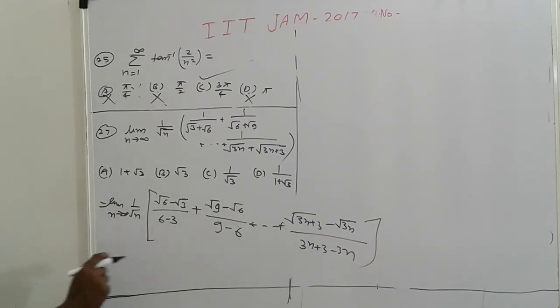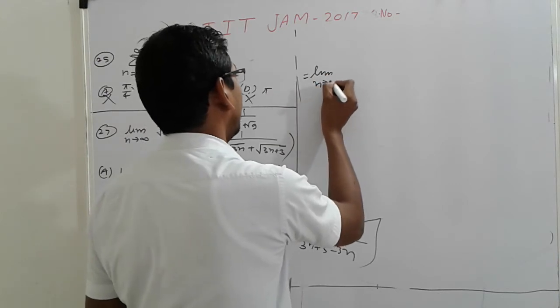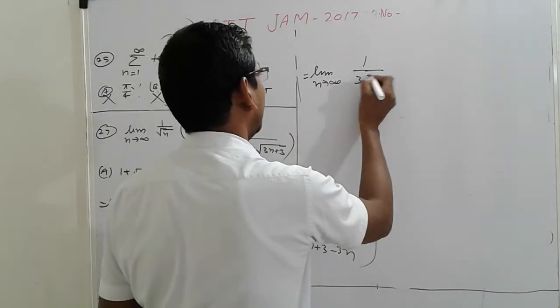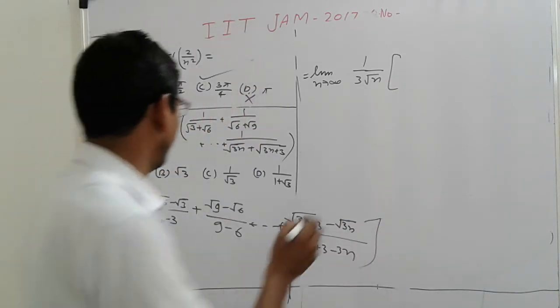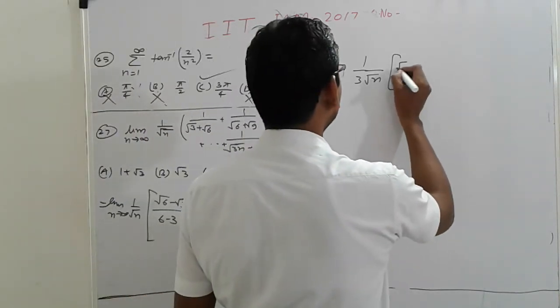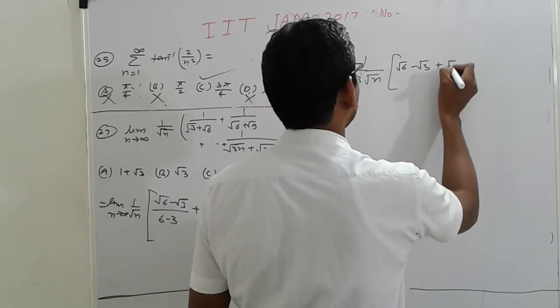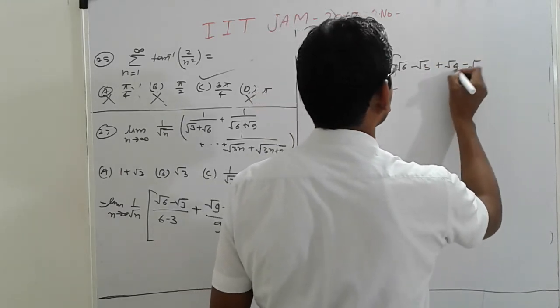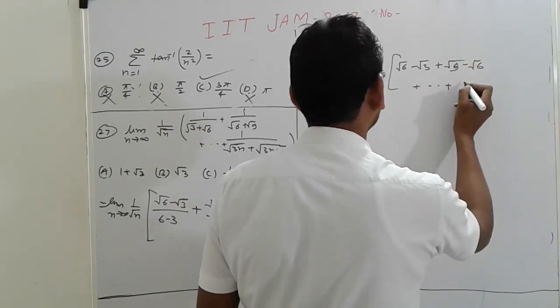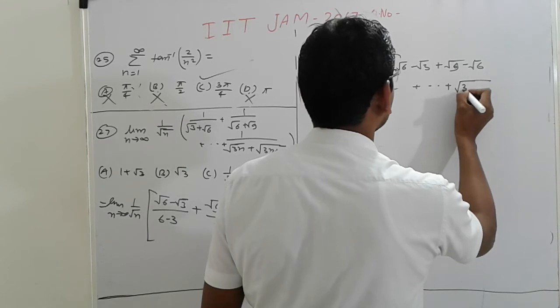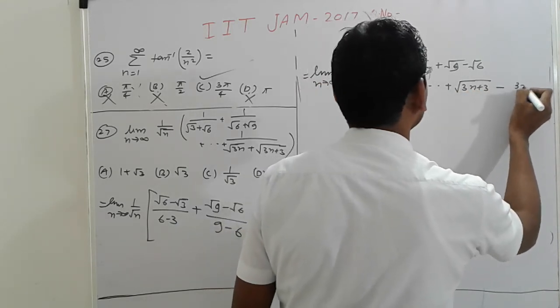So what we get: simply 3 is common. 3 common, so limit of n tending to infinity, 1 upon 3 root n. Inside, first we write down: root 6 minus root 3, root 9 minus root 6, up to root(3n plus 3) minus root 3n.